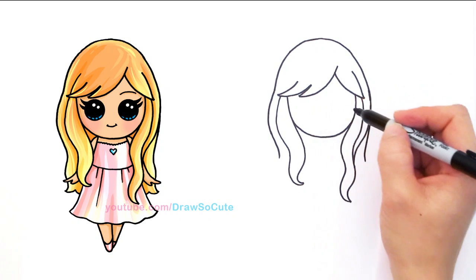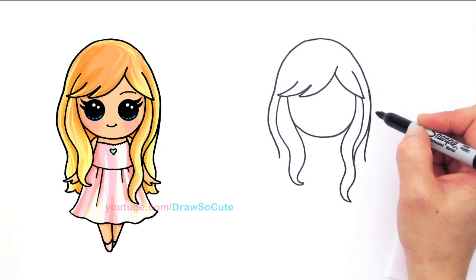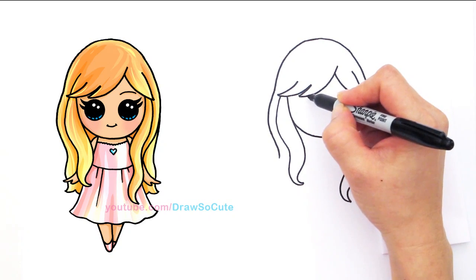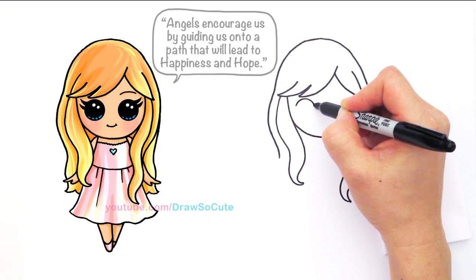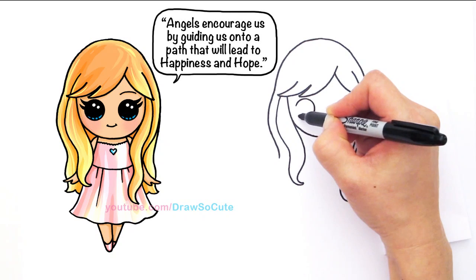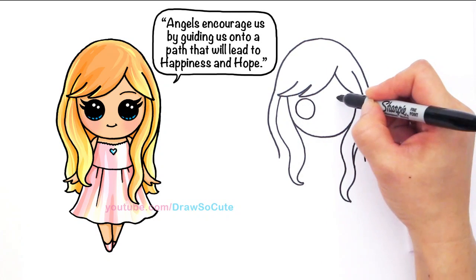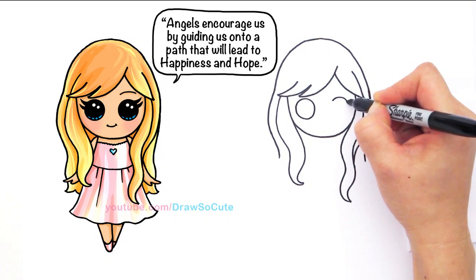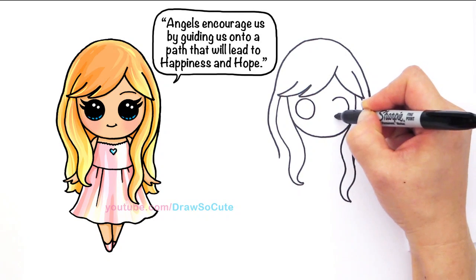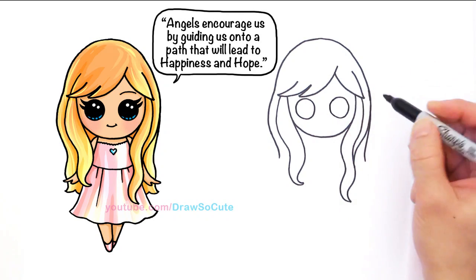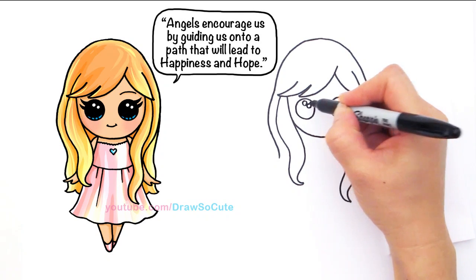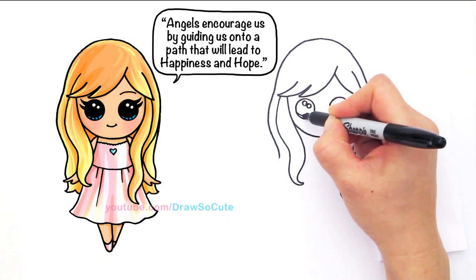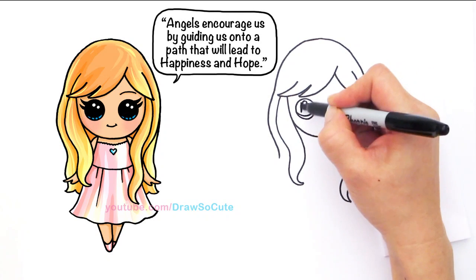And so now we can bring her to life and give her her draw-so-cute eyes. So right here, towards this strand of hair, I'm going to draw a circle, and the other side. Draw-so-cute eyes have two small circles inside for highlights, a curve line at the bottom, and shade in the top.